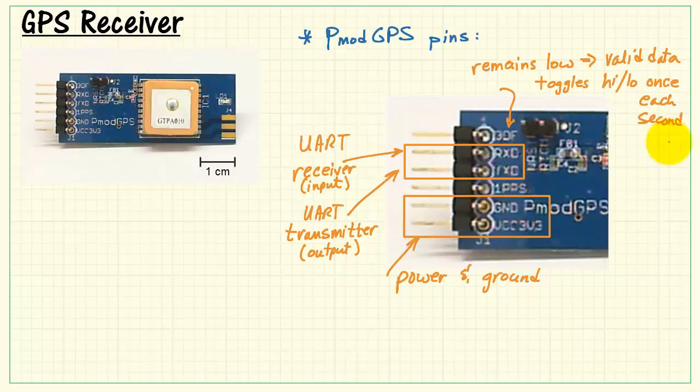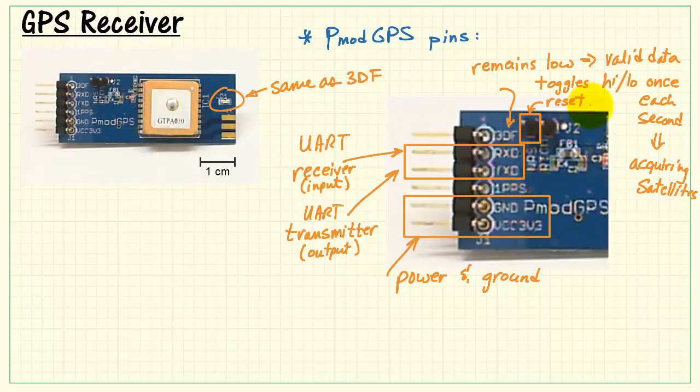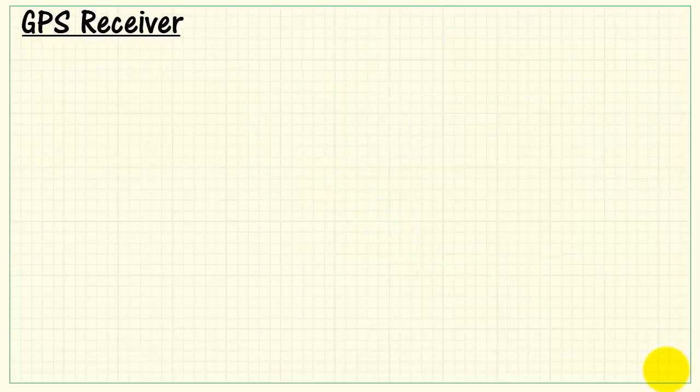Here we have the 2D and 3D fix. This remains low when you have valid data, and then it begins to toggle high and low once each second when it's acquiring satellite fixes. This signal is also connected to this onboard LED, so that provides a useful indicator when the board is looking for satellites. Here we have the reset, and you drive that low, and that's the same thing as power cycling the board.